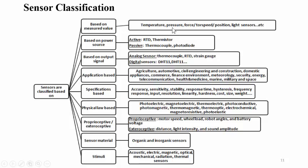Sensors are mainly classified based on the measured value — for example, whether you are measuring the temperature of any system, the pressure of a wall, force, torque, speed, position of a particular object, or light-related information. So depending on the measured value, different sensors are available.